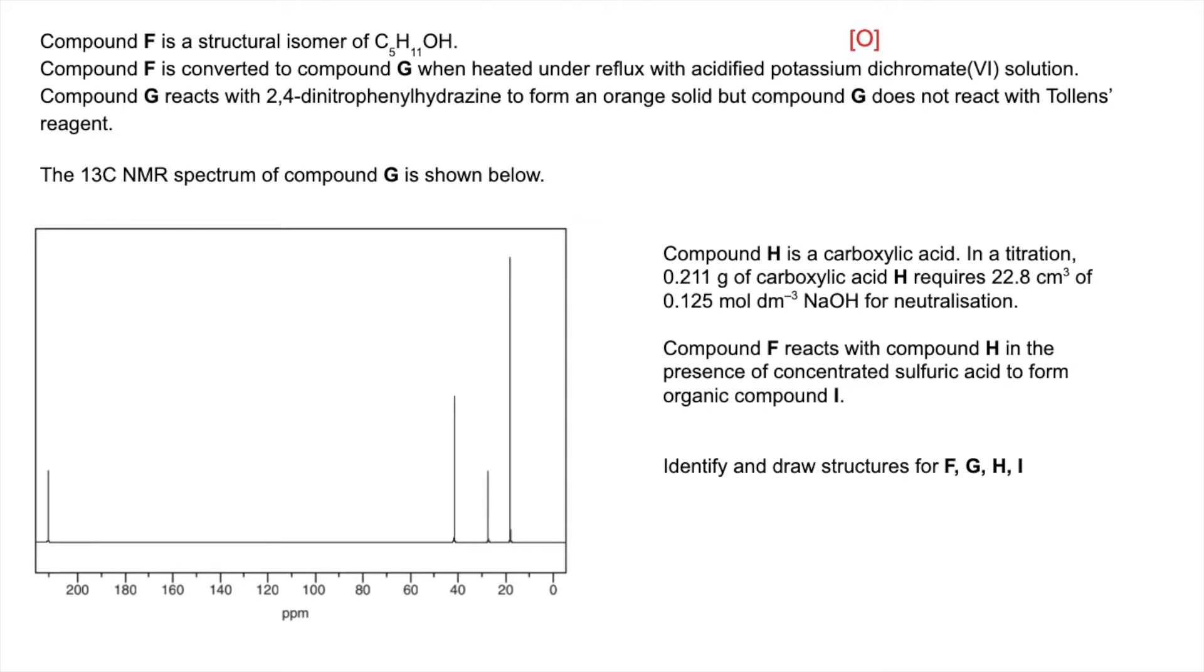Compound G reacts with 2,4-DNP to form an orange solid, so it must be a carbonyl. But compound G doesn't react with Tollens to give a silver mirror, so therefore it's not an aldehyde, it must be a ketone.